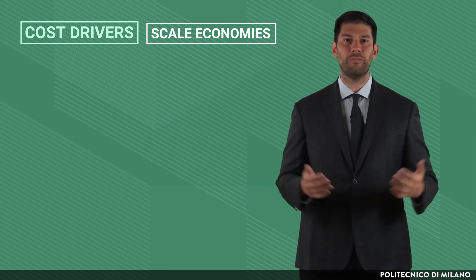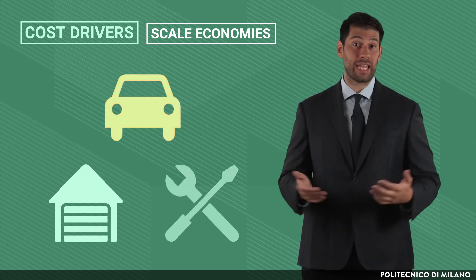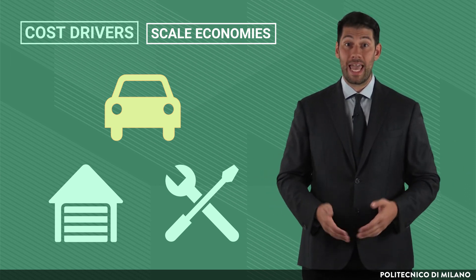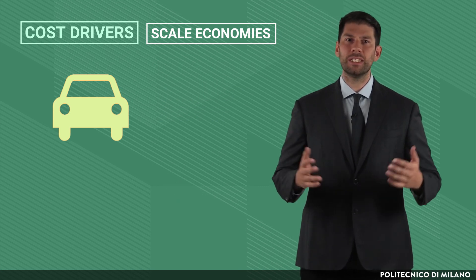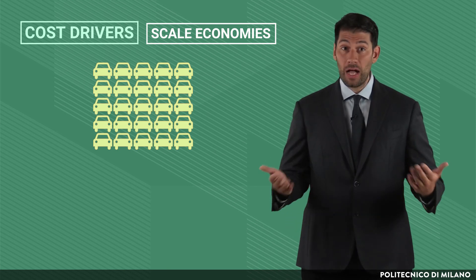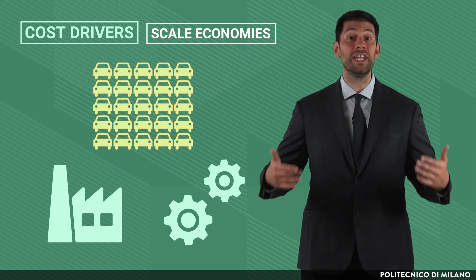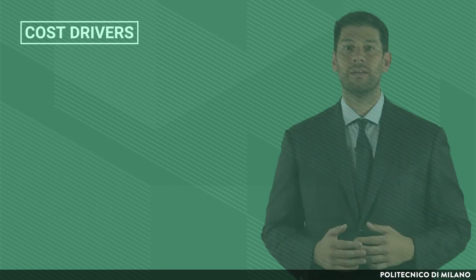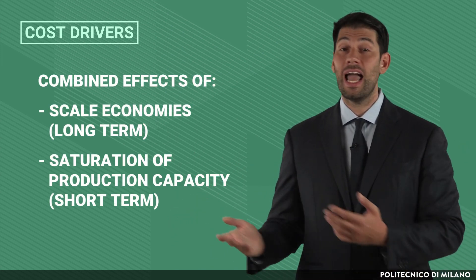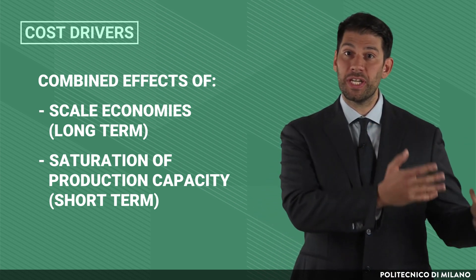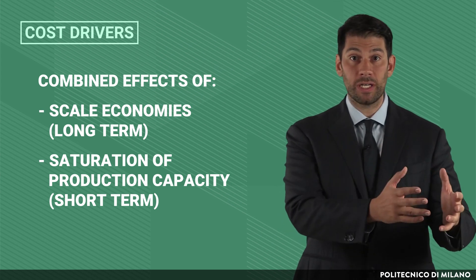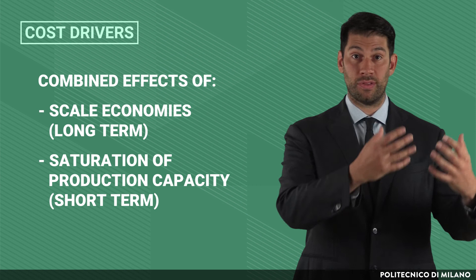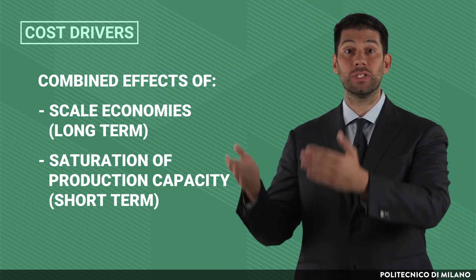To consider a trivial example: if you need to produce one car per year, you can do that in your garage with basic technologies in a workshop fashion, since your scale does not justify additional investments, and that car will have a high cost per unit. But if you need to manufacture one million cars per year, such volume will justify an investment in automation, which represents another technological and organizational configuration with a much lower cost per unit. As a whole, the cost drivers of scale economies and saturation level have combined effects, since cost per unit depends on both the long-term choice of sizing the technology and organizational configuration and on the actual level of saturation of the chosen plant in the short term.